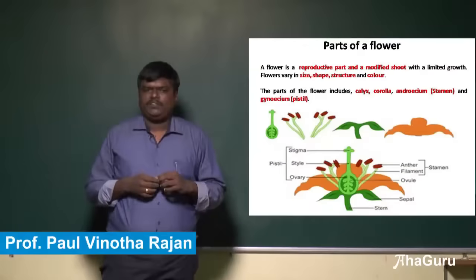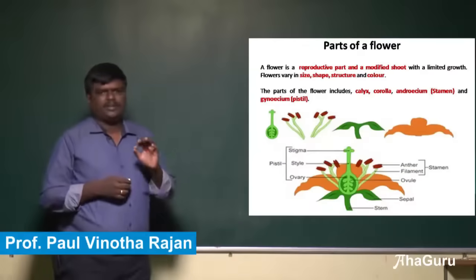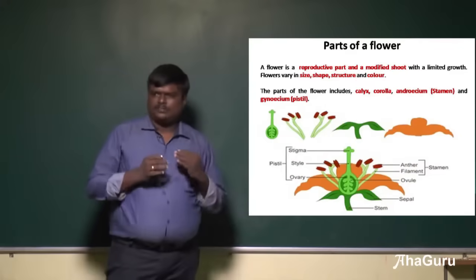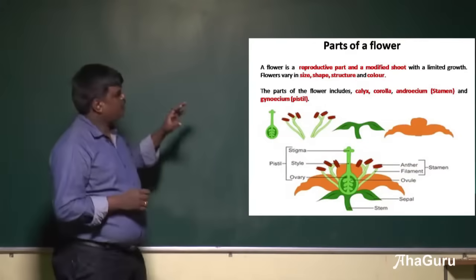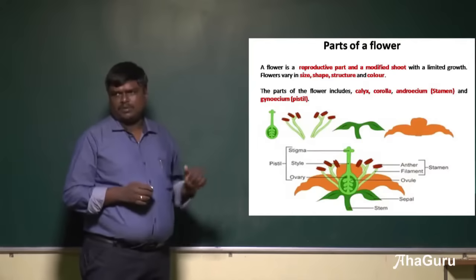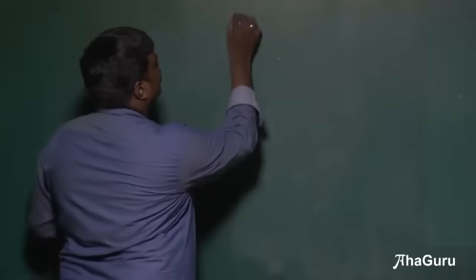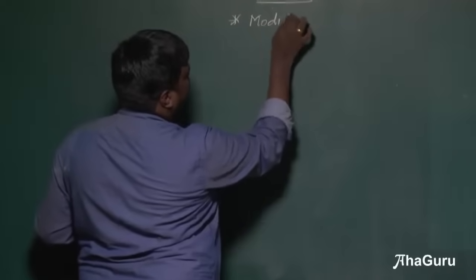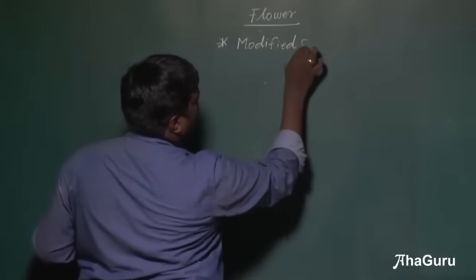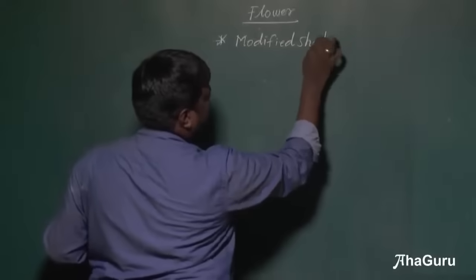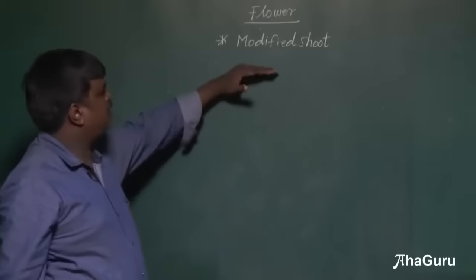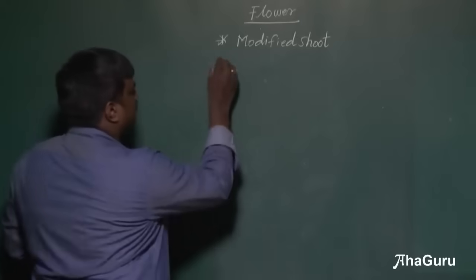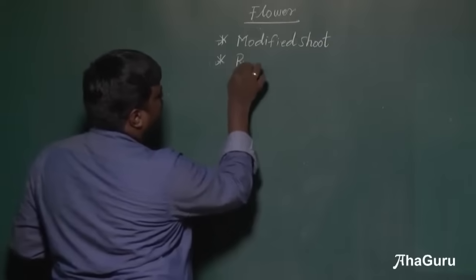Parts of a flower. If you take a typical flower belonging to angiosperms, it has four parts. Before that, we learn what a flower is all about. A flower is a modified shoot system. It is a modified shoot, and a flower is also a reproductive part.